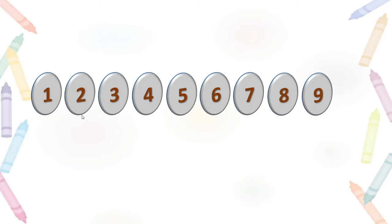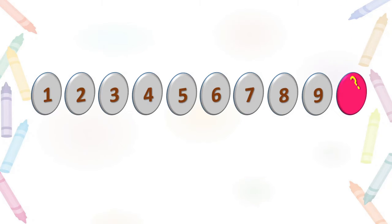You know 2 comes after 1. 4 comes after 3. When we add 1 more to 5, it becomes 6. When we add 1 more to 6, it becomes 7. When we add 1 more to 7, it becomes 8. When we add 1 more to 8, it becomes 9. And when we add 1 more to 9, which number do we get? Do you know? Let us try to find out this number today.